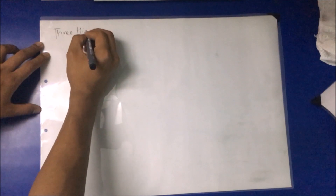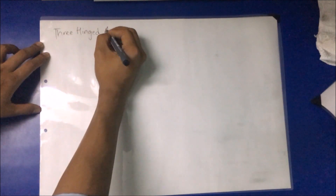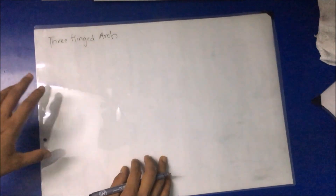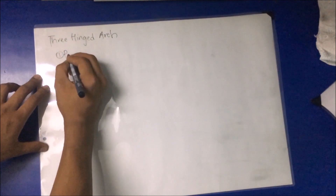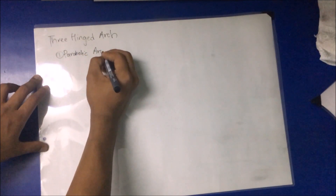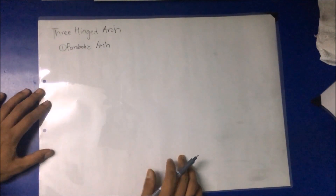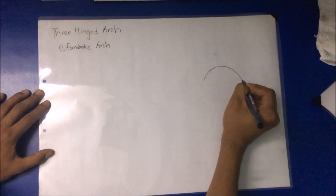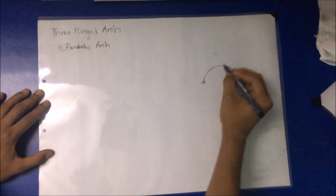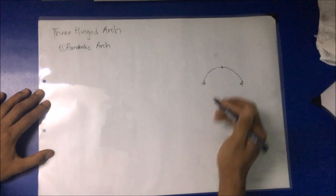In this video we'll discuss the three-hinged arch. We'll focus on the parabolic arch; for circular arcs we will discuss in the next video. So in parabolic arcs, let me take an arch — a three-hinged arch.